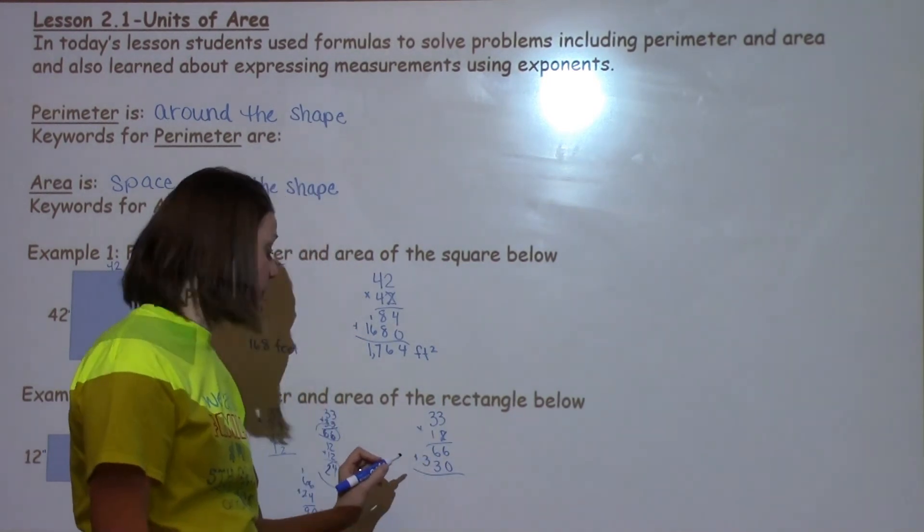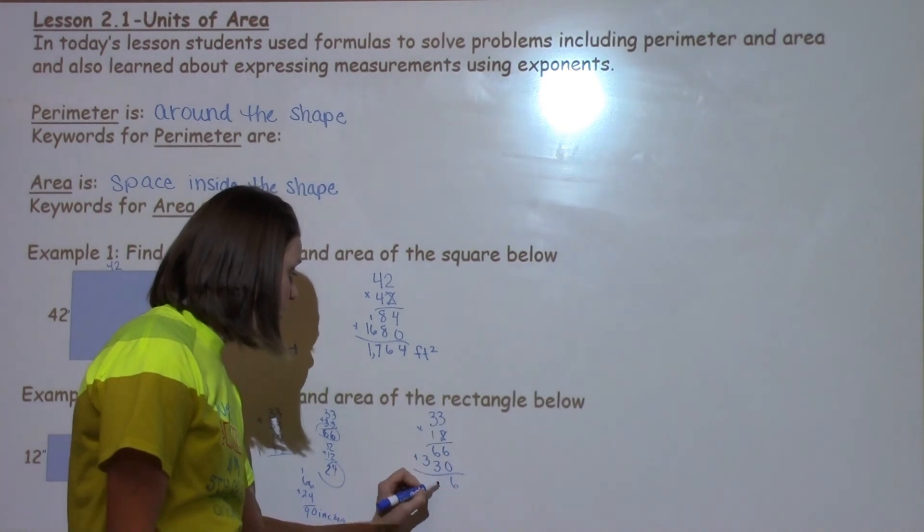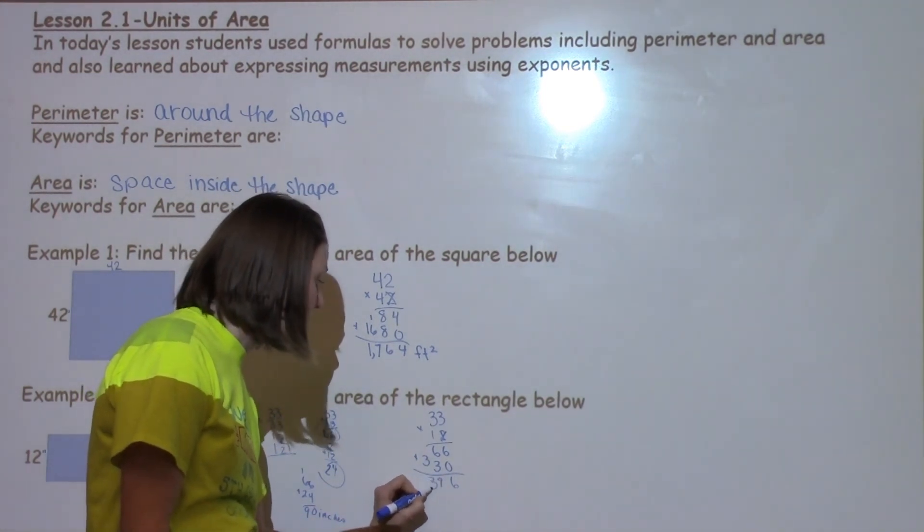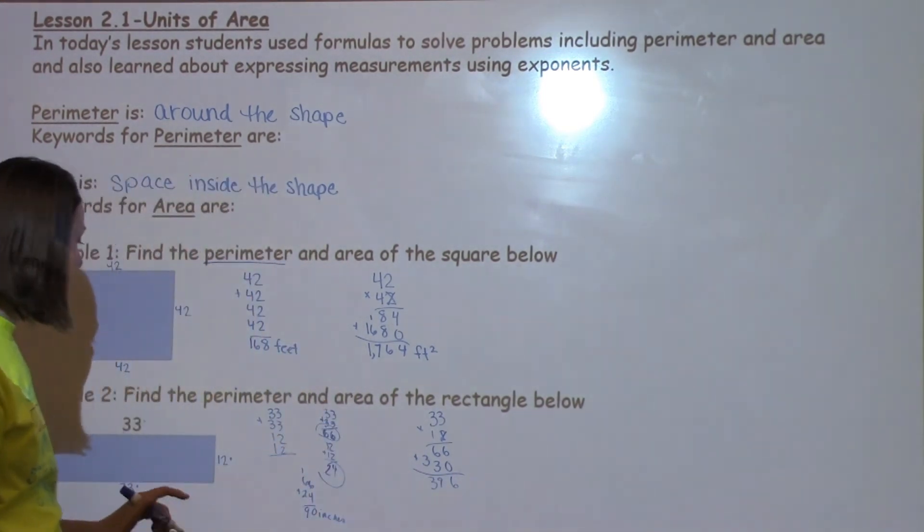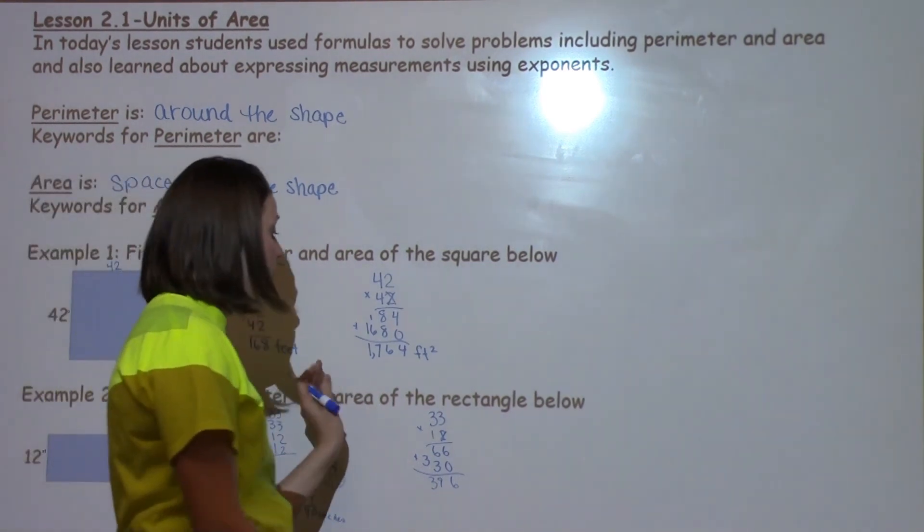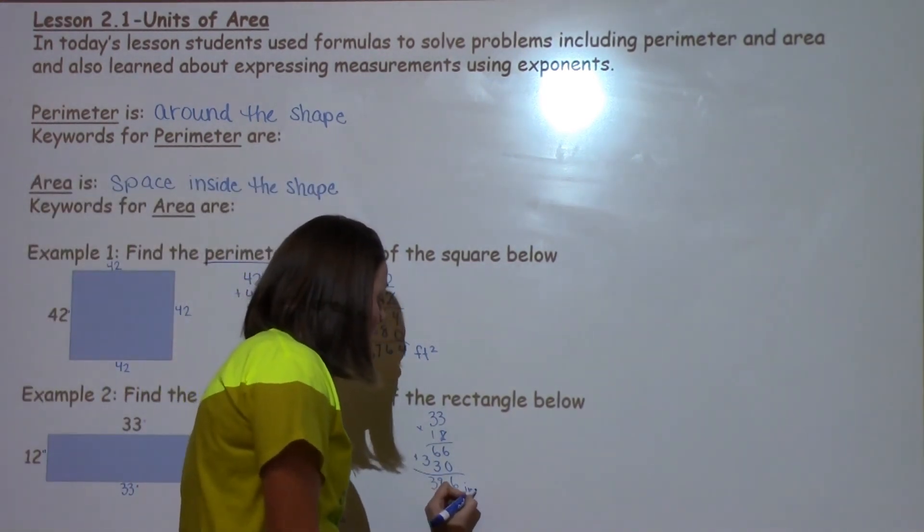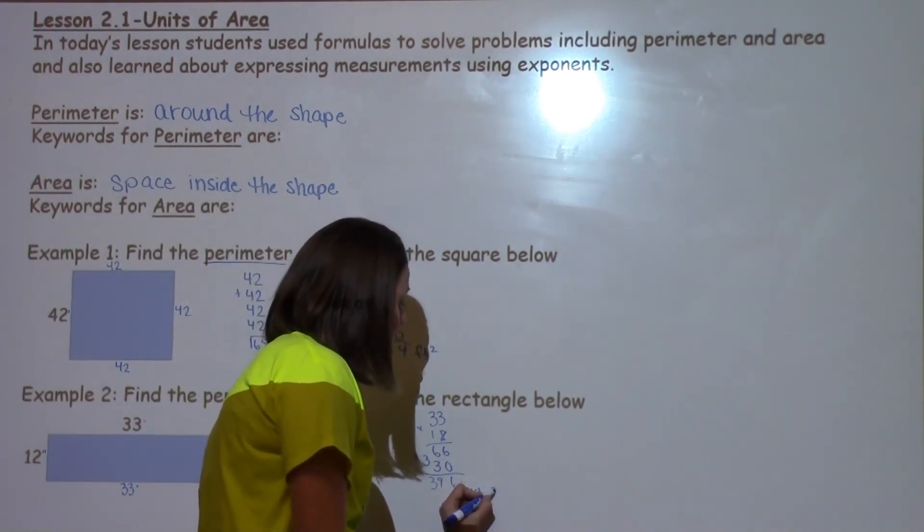Now I simply just need to add these two numbers together. 6, 9, and 3. Now I need to go ahead and put my label on here. In this case it is inches, and I am working with area, so I know that this is going to be inches squared.